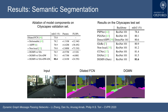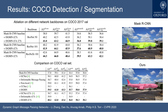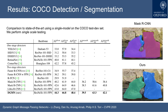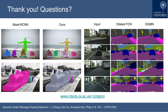We achieved state-of-the-art semantic segmentation performance on CityScape. We outperformed alternatives on object detection and instance segmentation on COCO. This table shows our results on the COCO test-dev set. For more details, please refer to our paper.